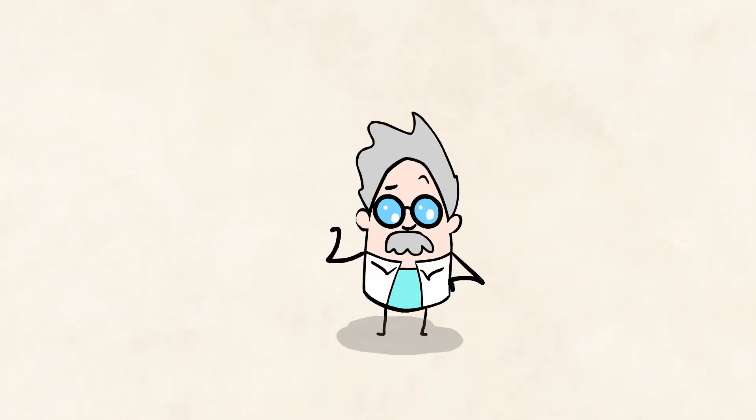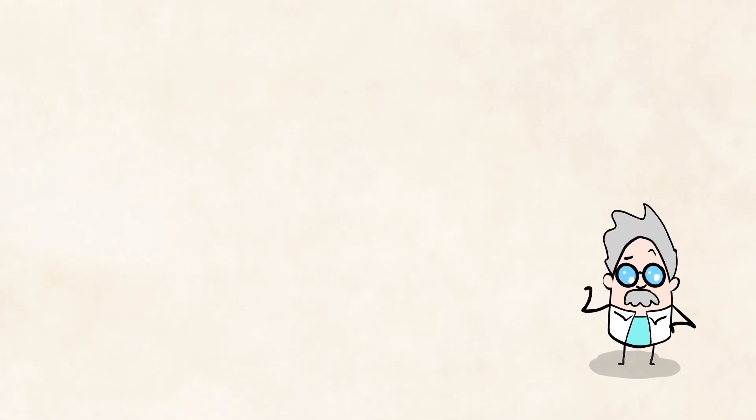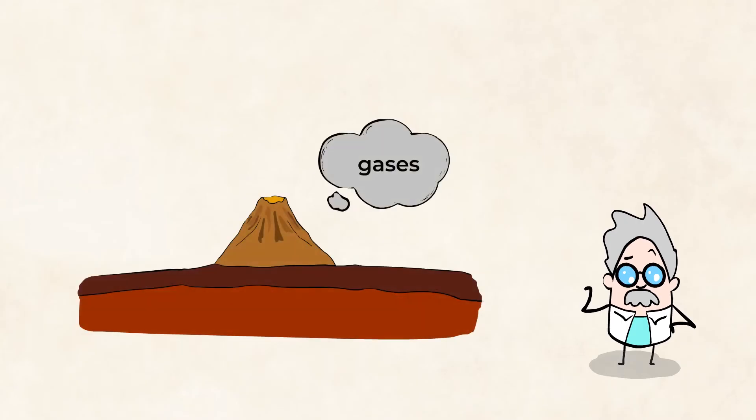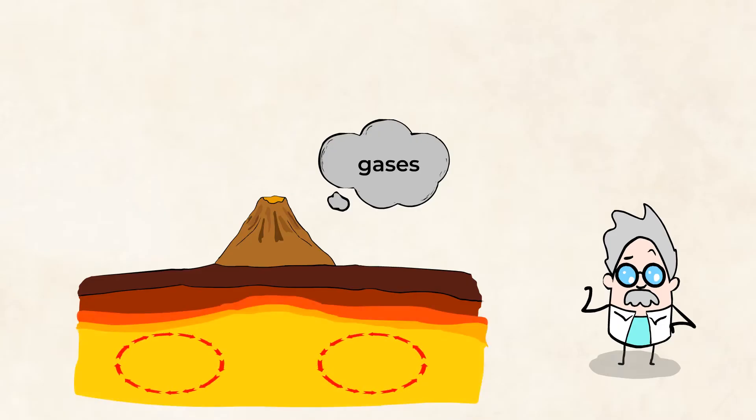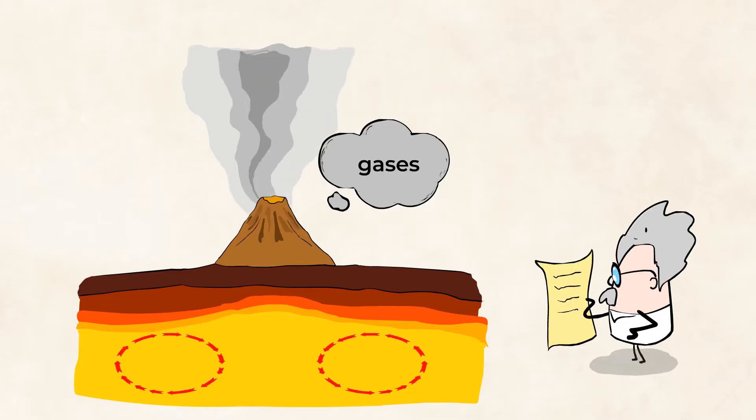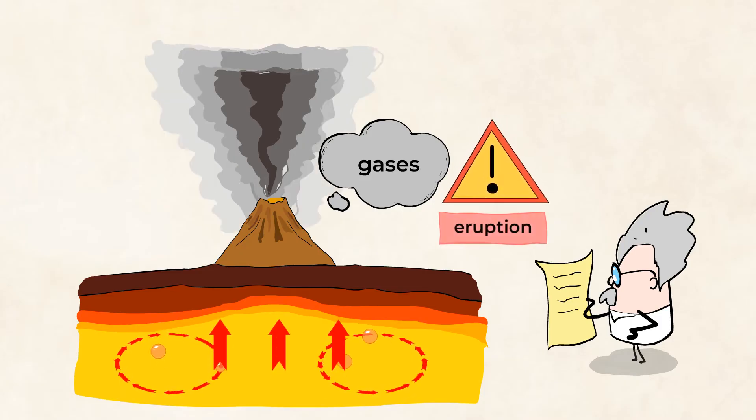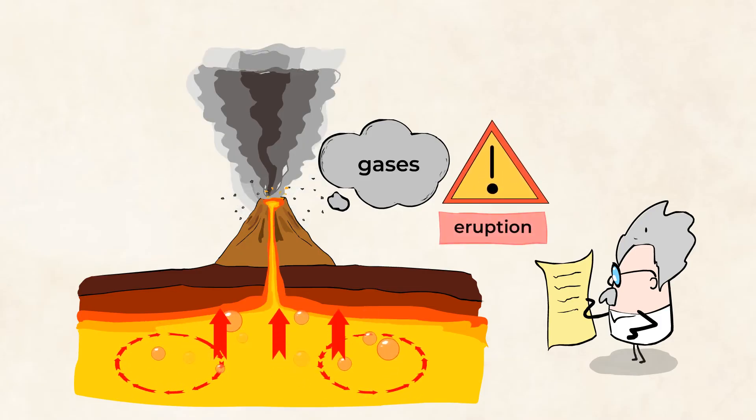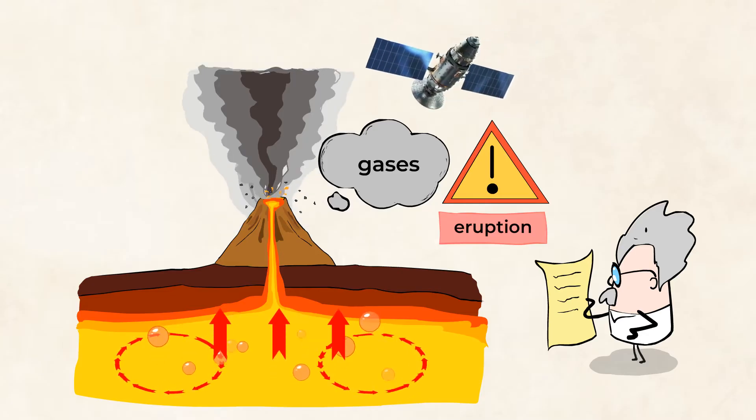Another way that scientists work to predict volcanic eruptions is to monitor the gases that the volcano is releasing into the atmosphere. When magma is moving beneath the surface, gases are released from the volcano. If scientists notice a change in the mixture of gases being released, it could mean an eruption is coming. Scientists can monitor the gases of a volcano on land or from space. Isn't it incredible that we have tools to track volcanoes from space? It totally blows my mind.